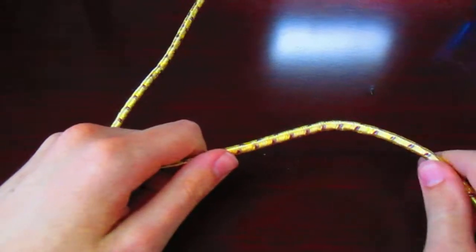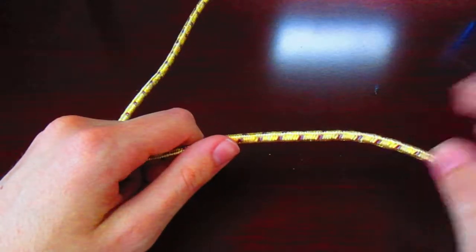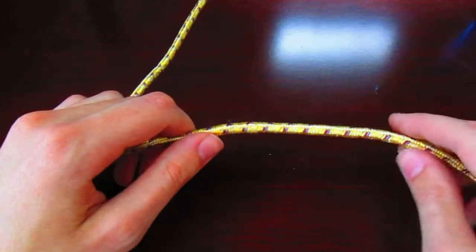Now make sure that you have plenty of rope. A sheepshank is a type of knot to shorten the rope or to shorten out the bad part of the rope, so you are only using the good part.